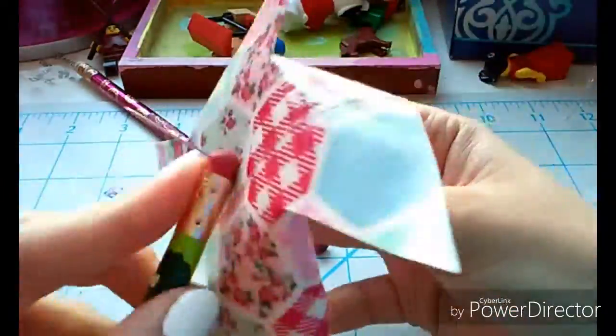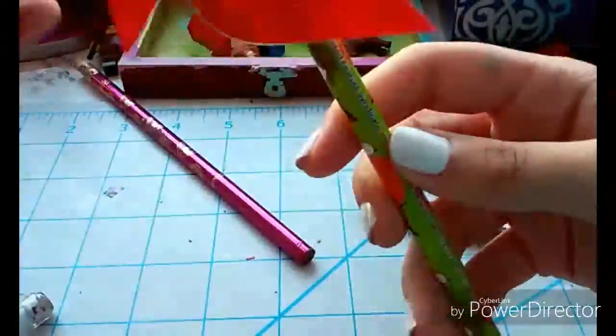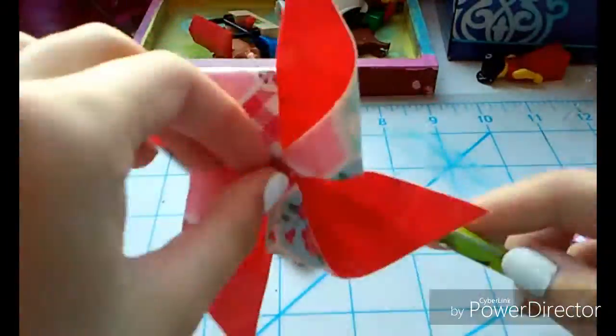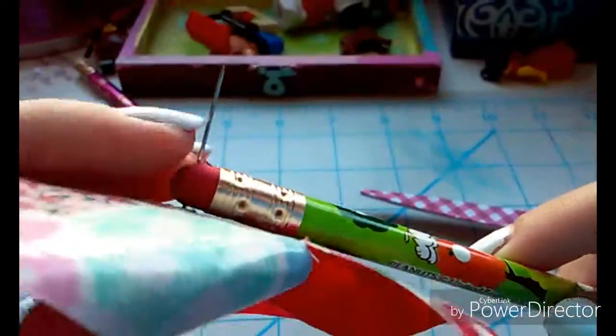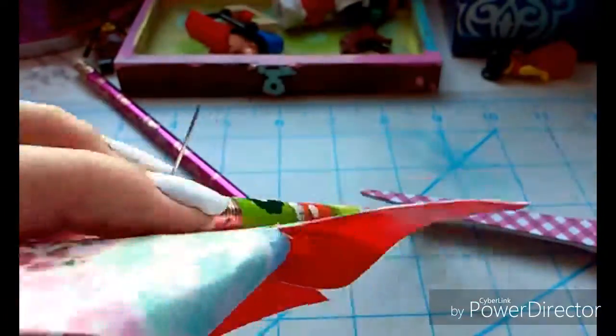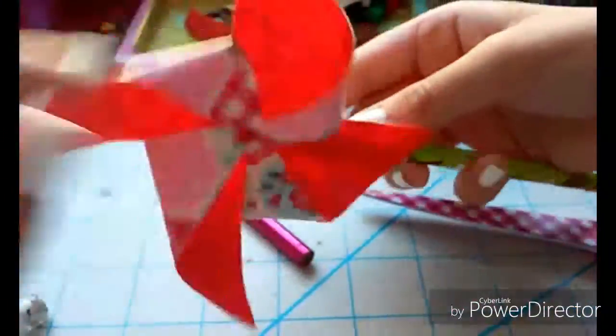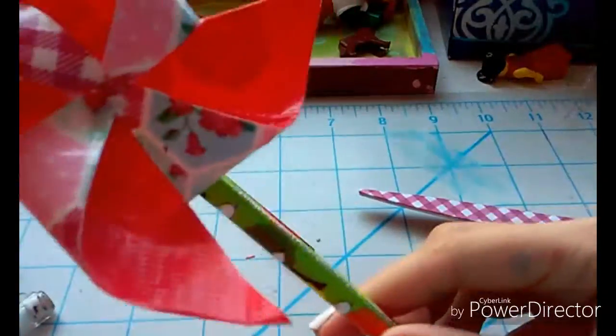So then you can either just poke it through the back of the eraser for your pencil and then just make sure that it's not too tight so that this can actually spin. So it would be about that loose just so there's actually some room for it to spin, just like that. And then you could bend the back or put a cap on it somehow or whatever.